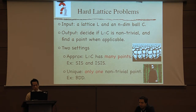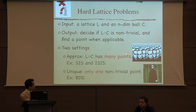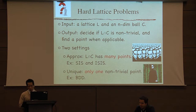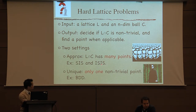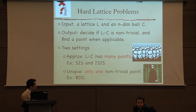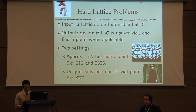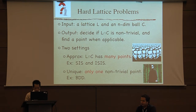There are essentially two settings. Either there are many solutions — like here — which is the case of SIS or ISIS. Or you're in the unique setting, where there's only one solution, a very special one, and you want to find it — that's BDD, Bounded Distance Decoding. There are many other problems like that.